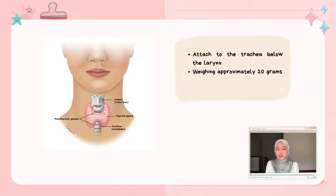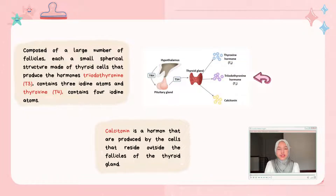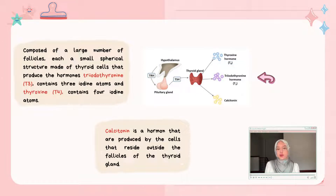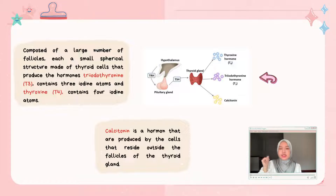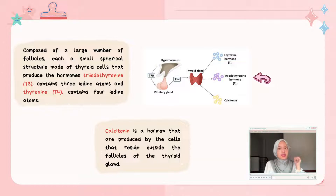The thyroid gland is attached to the trachea below the larynx, weighing approximately 20 grams. It is composed of a large number of follicles, each a small spherical structure made of thyroid cells that produce the hormone triiodothyronine T3, which contains 3 iodine atoms, and thyroxine T4, which contains 4 iodine atoms.